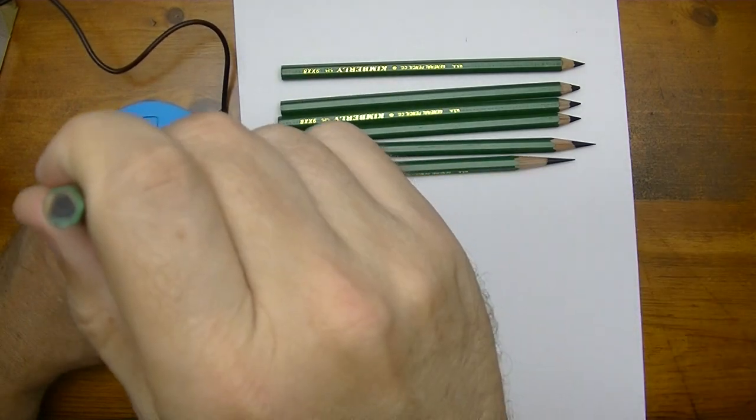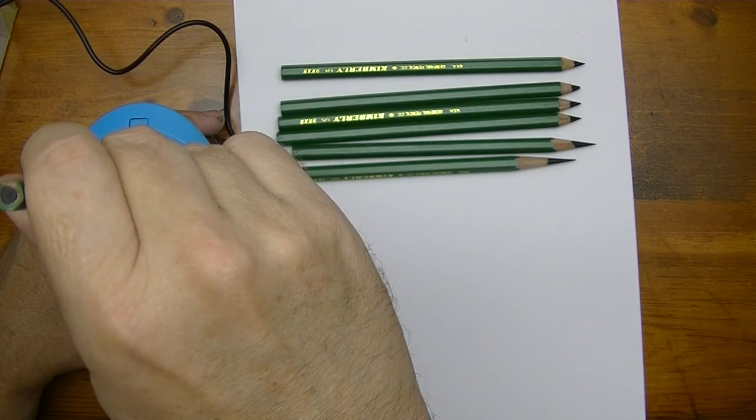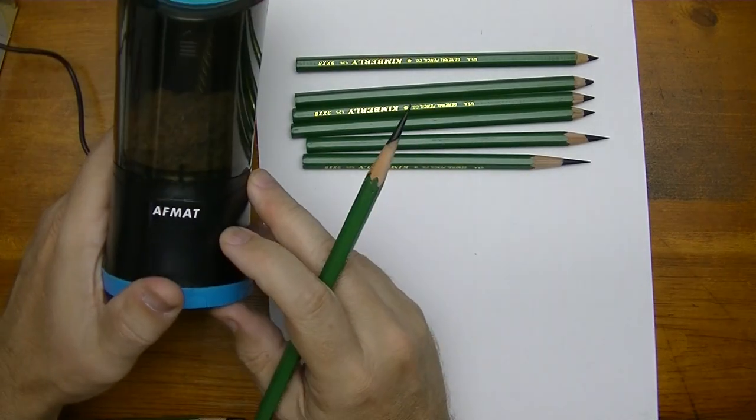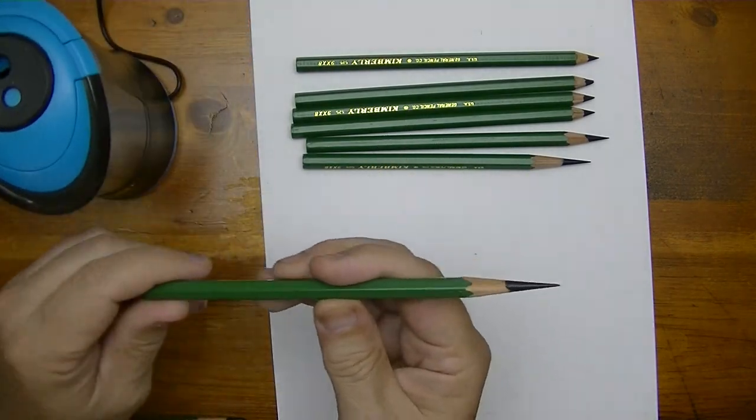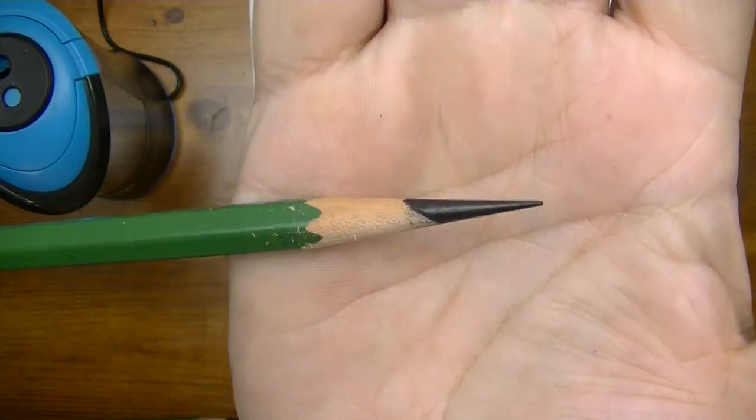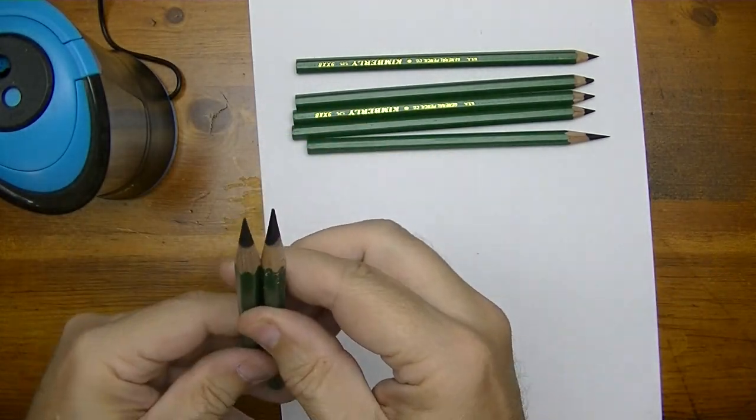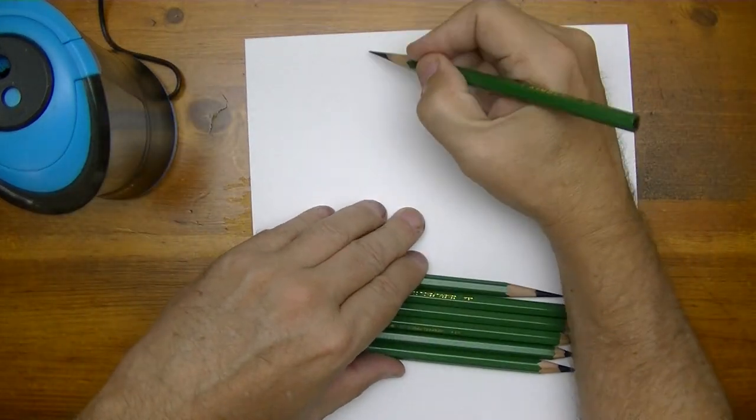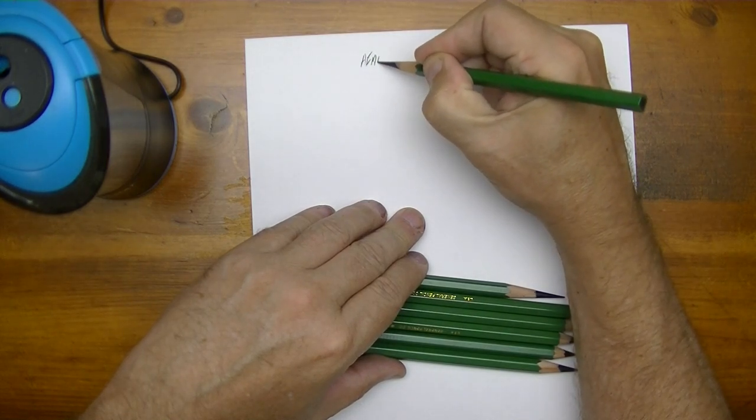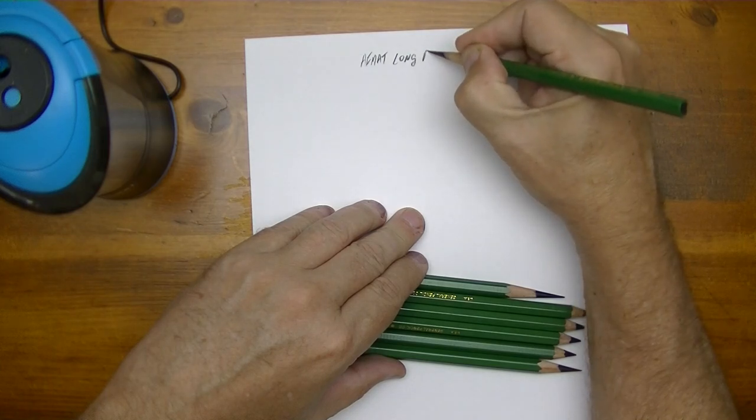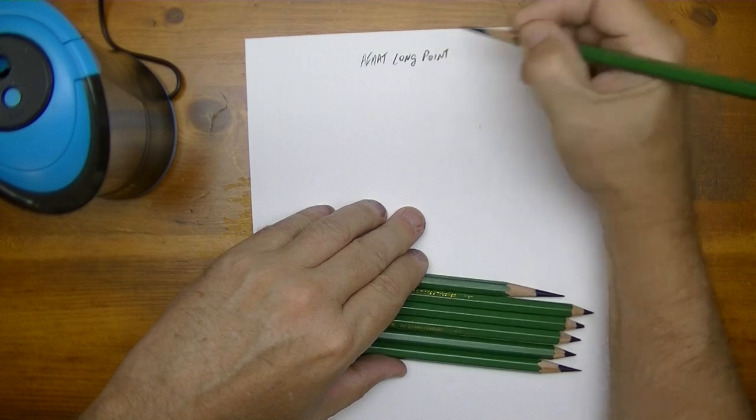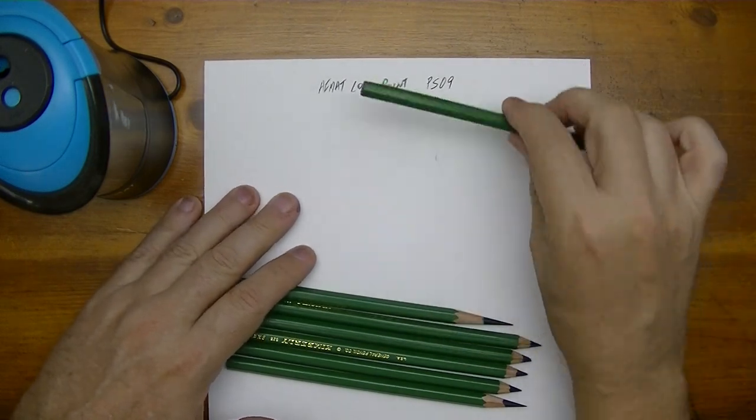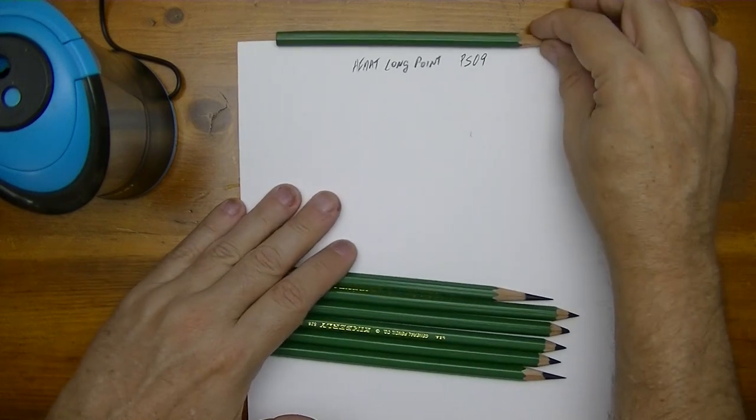But let's see what kind of point we get out of this. You can see this has the short point here. Okay, it is an auto stop, so remember that this one here is an auto stop. Take a look at that point. We can pretty much stop right here because that is about the longest point I think I've ever seen. Okay, that's a long point. Let me just go ahead and write it up here that this is the Afmat long point. Okay, looks like it's called the PS09.